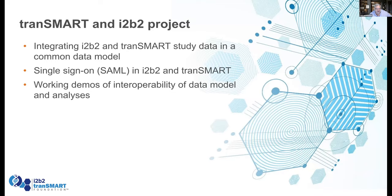In terms of the work between I2B2 and TransRent, the question is integrating the study data in a common data model. When you get I2B2 data into TransRent, what do we have to do on the code level to get that useful and usable within the different tools? And in the same fashion, when we get TransRent into I2B2 and load a data set, what does that mean in I2B2? There's not only work to be done, but the teams need to work together to sort through what that means. We're helping the I2B2 team — or they're helping us — figure out how to actually proceed.